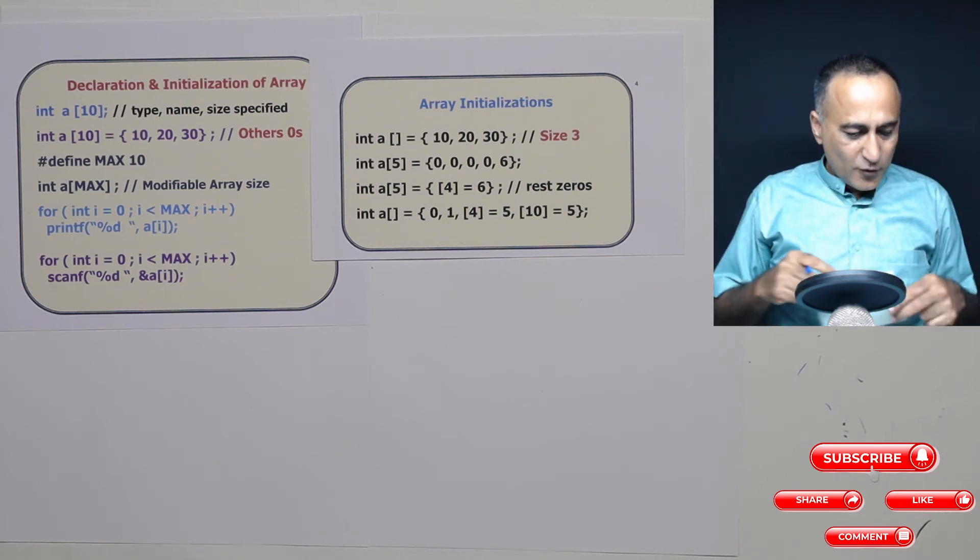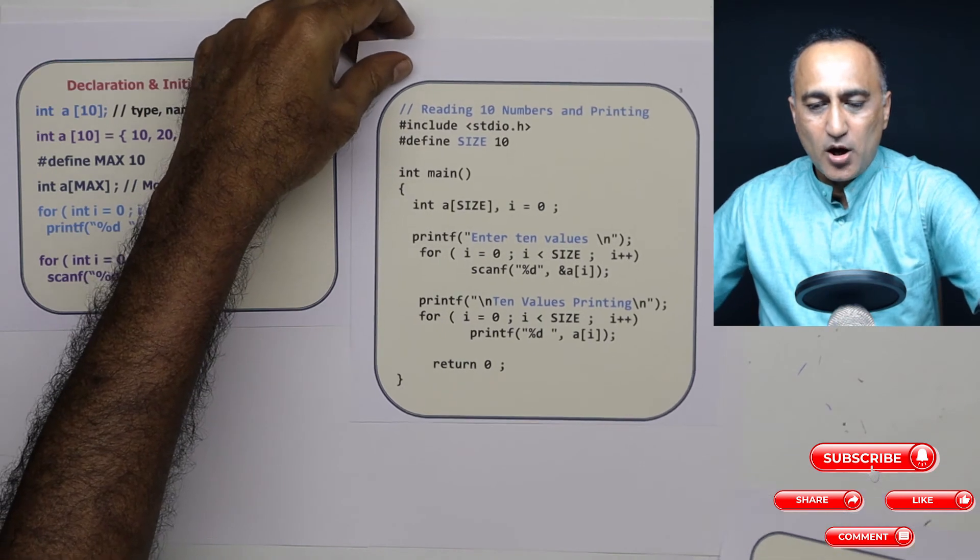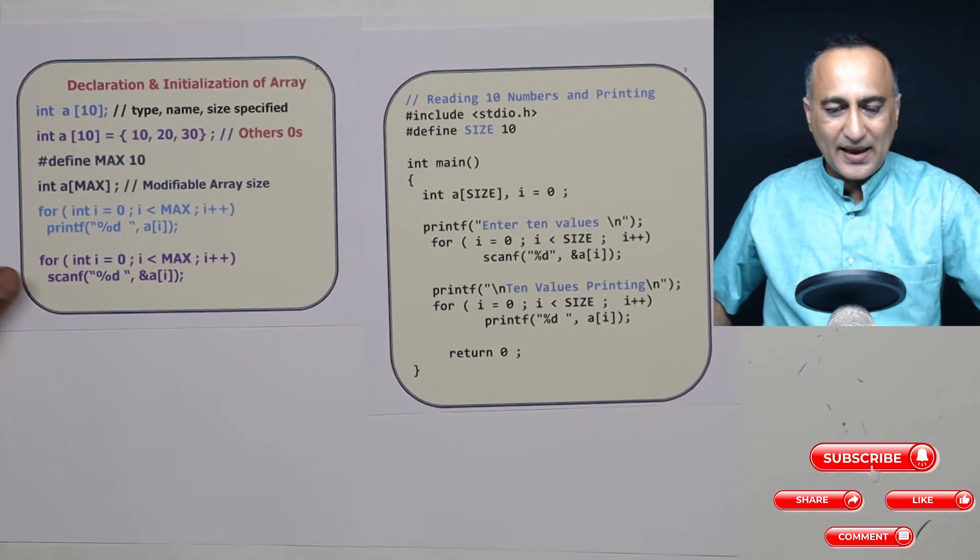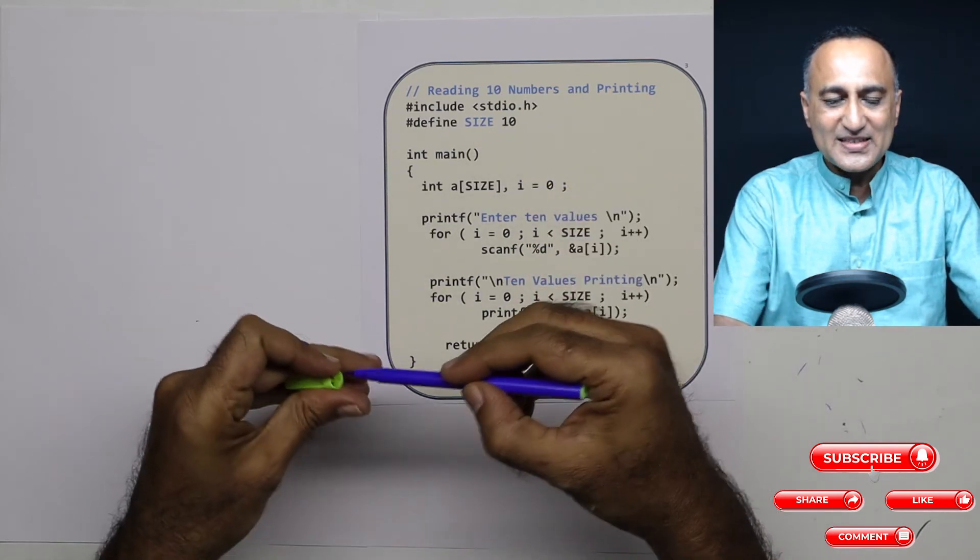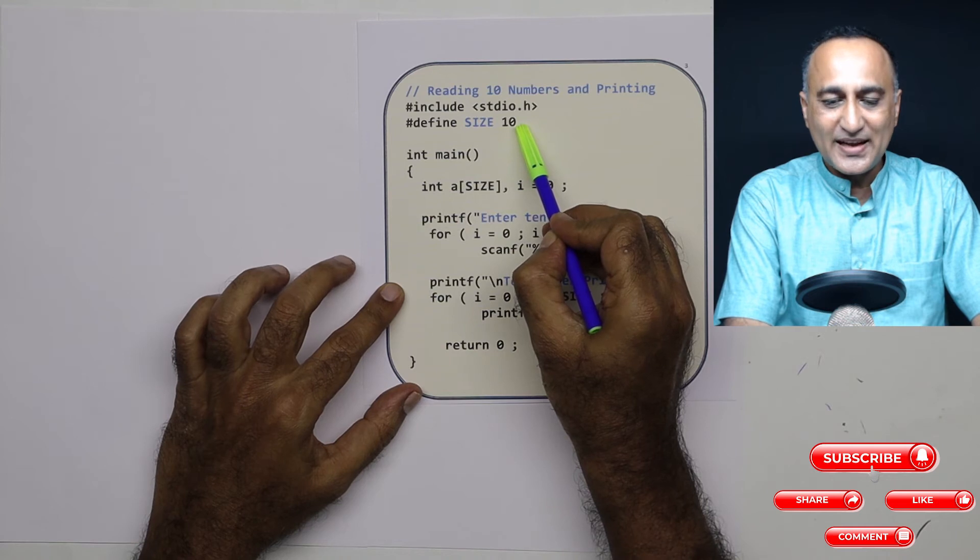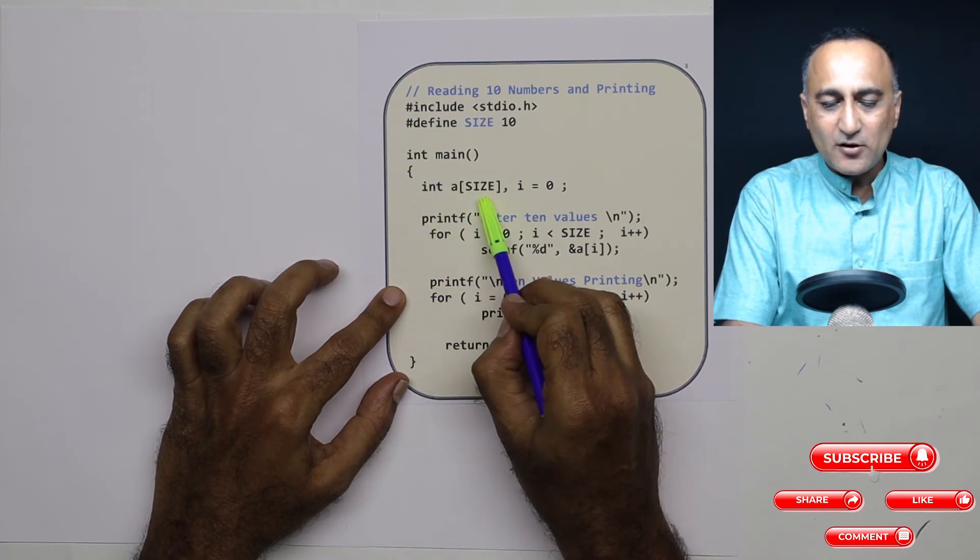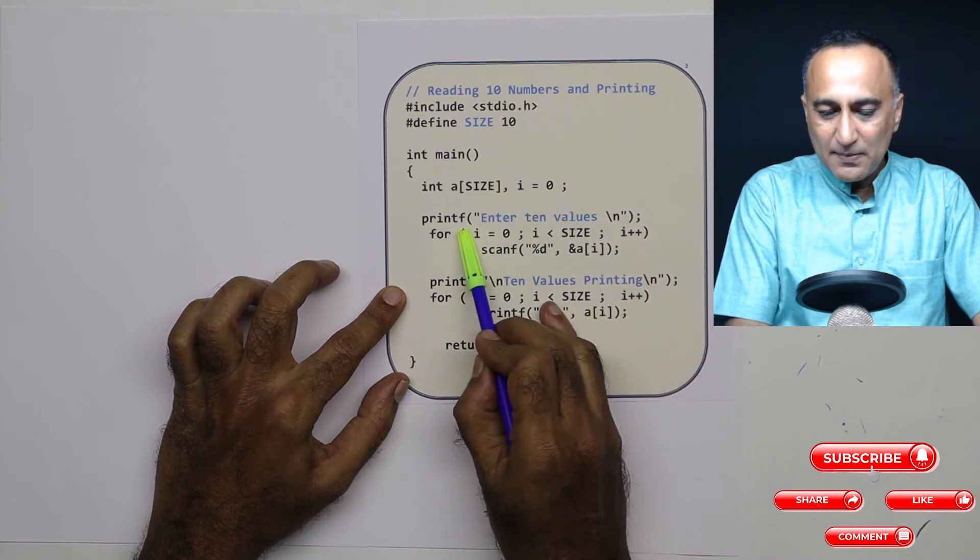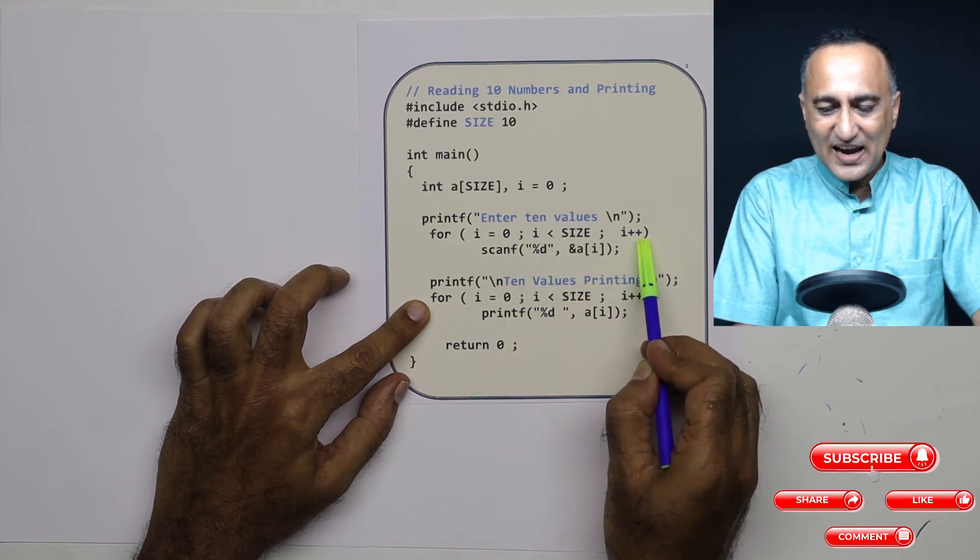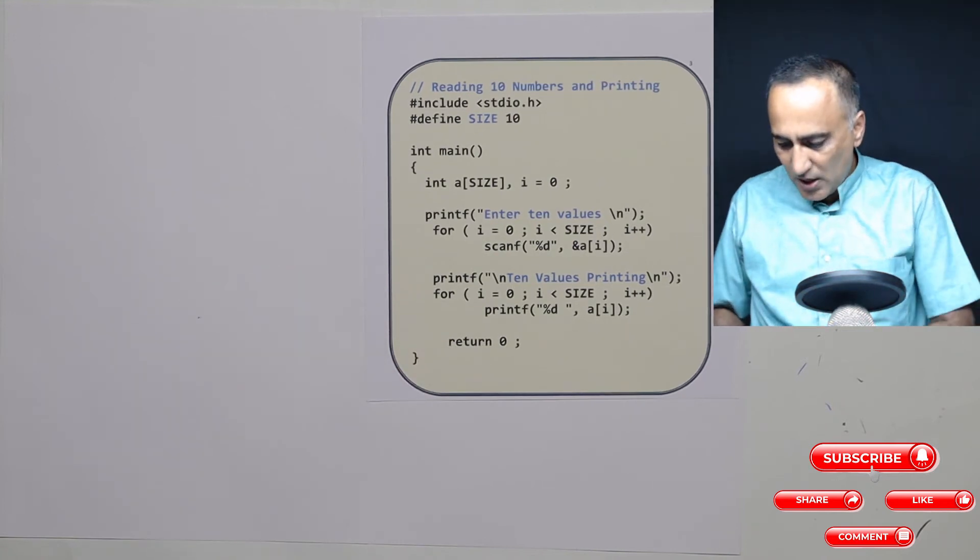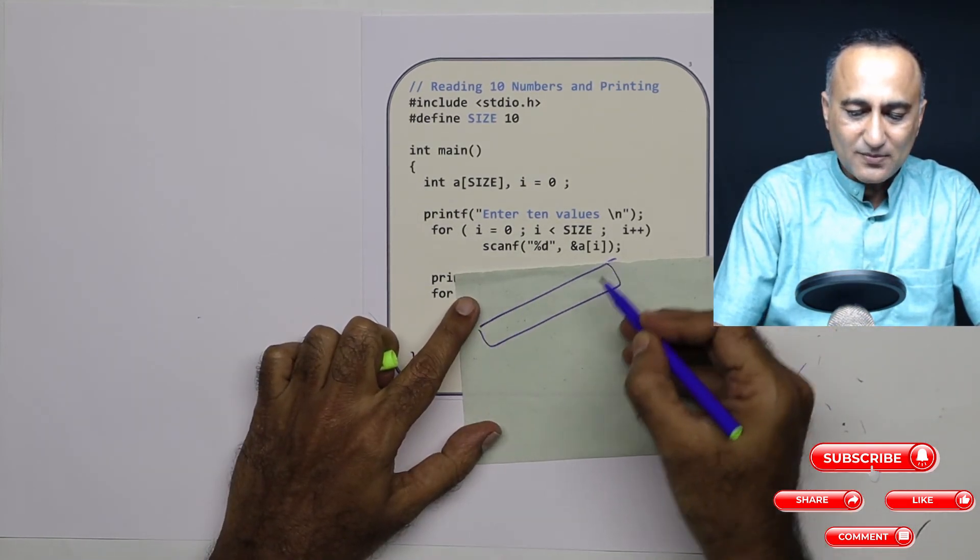Now let's try to do a few other things with an array. So the first thing what I will do is I will show you how you can go about reading 10 numbers into an array and how you can print 10 numbers from that same array. So what I have done is I have defined SIZE as a macro whose value is 10. So when the preprocessor runs, this SIZE is going to be replaced with 10. So I have declared an array int a of SIZE 10, subscript i is 0. I am asking the user enter 10 values for i equals 0, i less than SIZE, i plus plus.